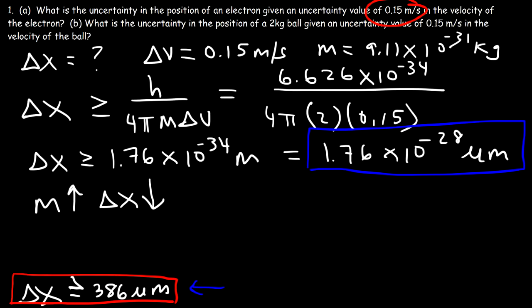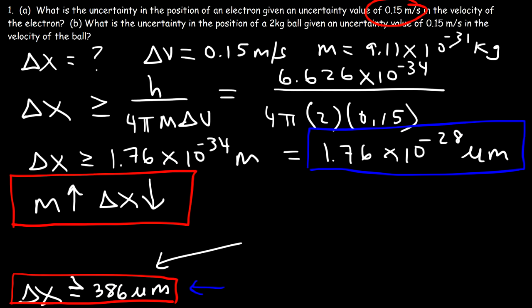The purpose of this problem is to show that large objects are more predictable than small things. As we increase the mass of the object, the uncertainty in its position decreases. For something as big as a ball, we know exactly where it's located. But for tiny things like an electron, there's much more uncertainty — we're not sure exactly where it's going to be, because it's so tiny and moves so fast. Large things have predictable behaviors with little uncertainty, while small things like electrons and photons have a lot of randomness. That's it for this video — thanks for watching.